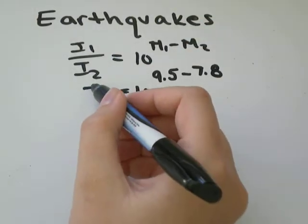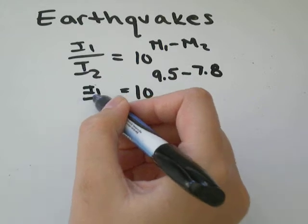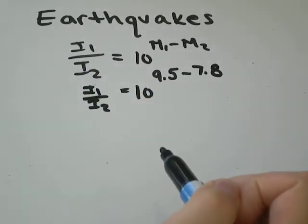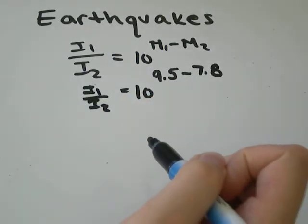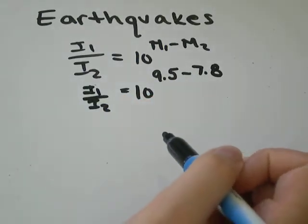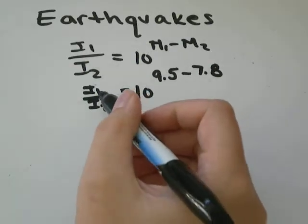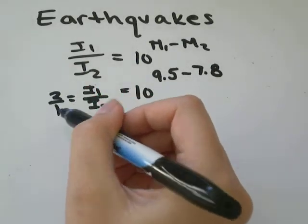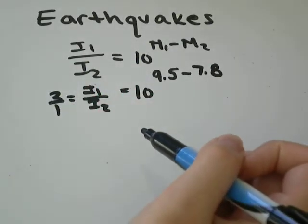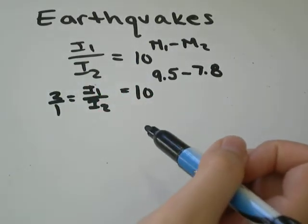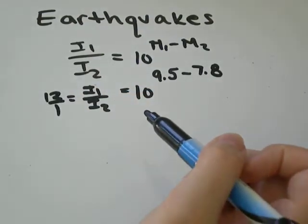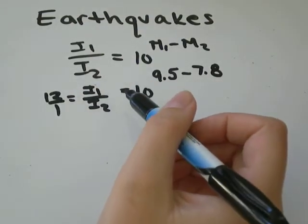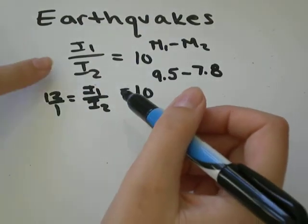I'm going to write I1 over I2, and that just means: if this equals 2 over 1, the first earthquake would be twice as intense; if it was 12 over 1, the first earthquake would be 12 times as intense.